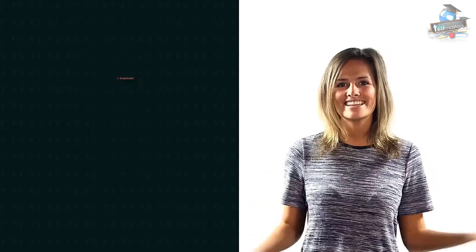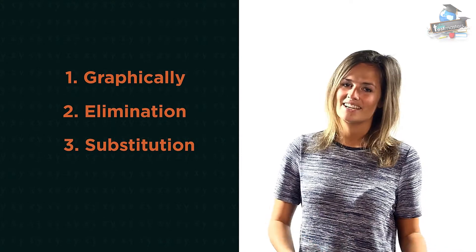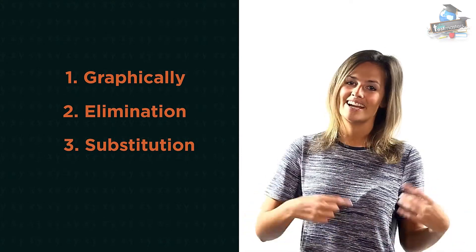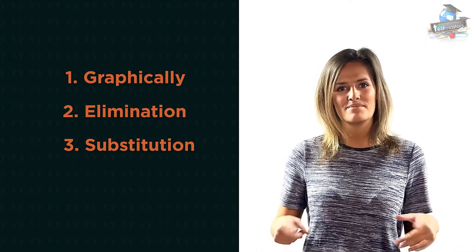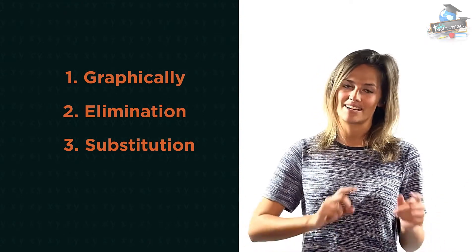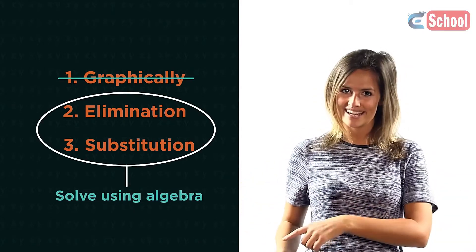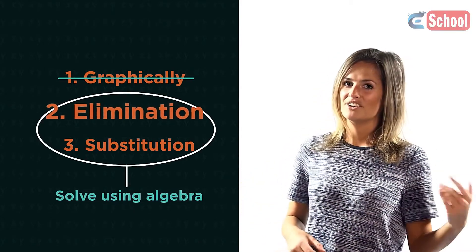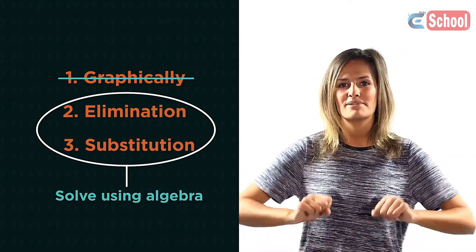There are three different methods we can use to solve simultaneous equations. We can solve them graphically and see where they cross each other, but this is really slow and actually only works if they cross at an exact point.